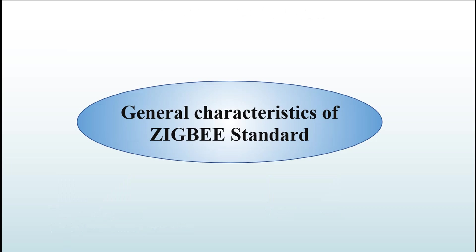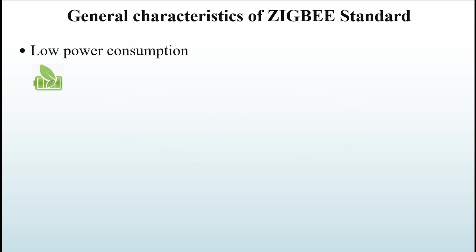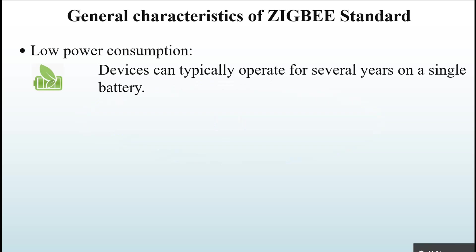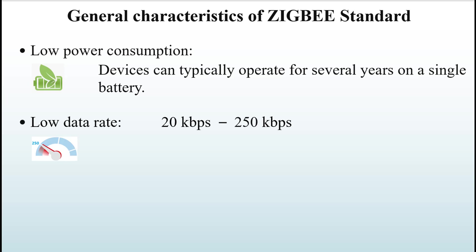Now let's look at some general characteristics of the Zigbee standard. Low power consumption: Zigbee devices can typically operate for several years on a single battery, spending most of their time in a power-saving sleep mode. Low data rate: it varies between 20 kilobits per second up to a maximum of 250 kilobits per second, which is sufficient for the applications Zigbee is intended for.